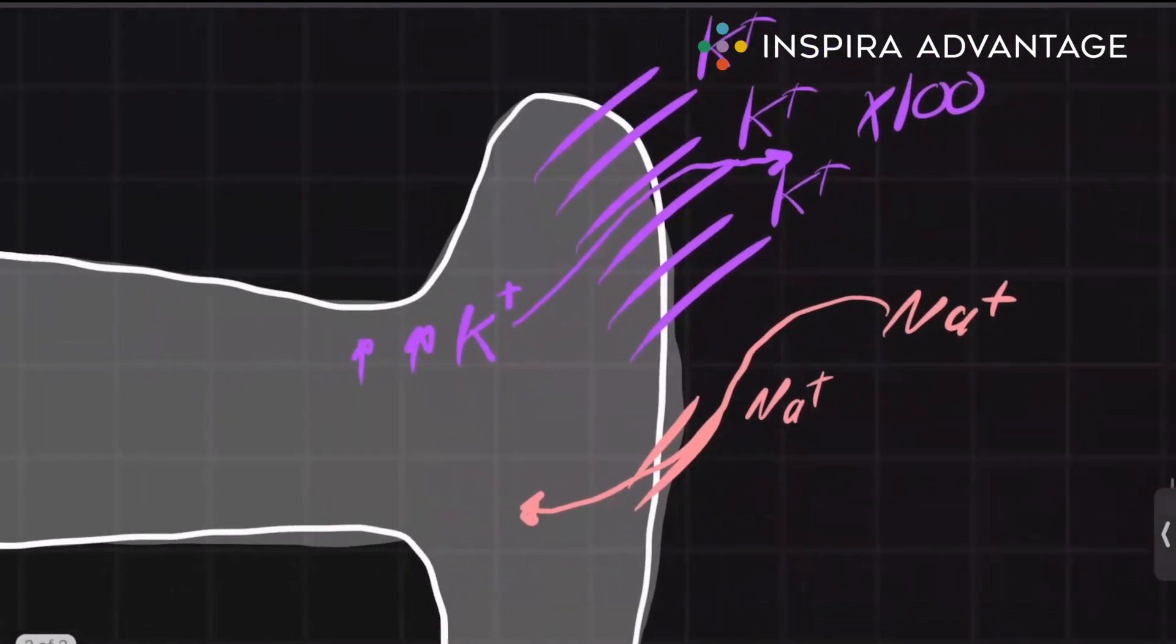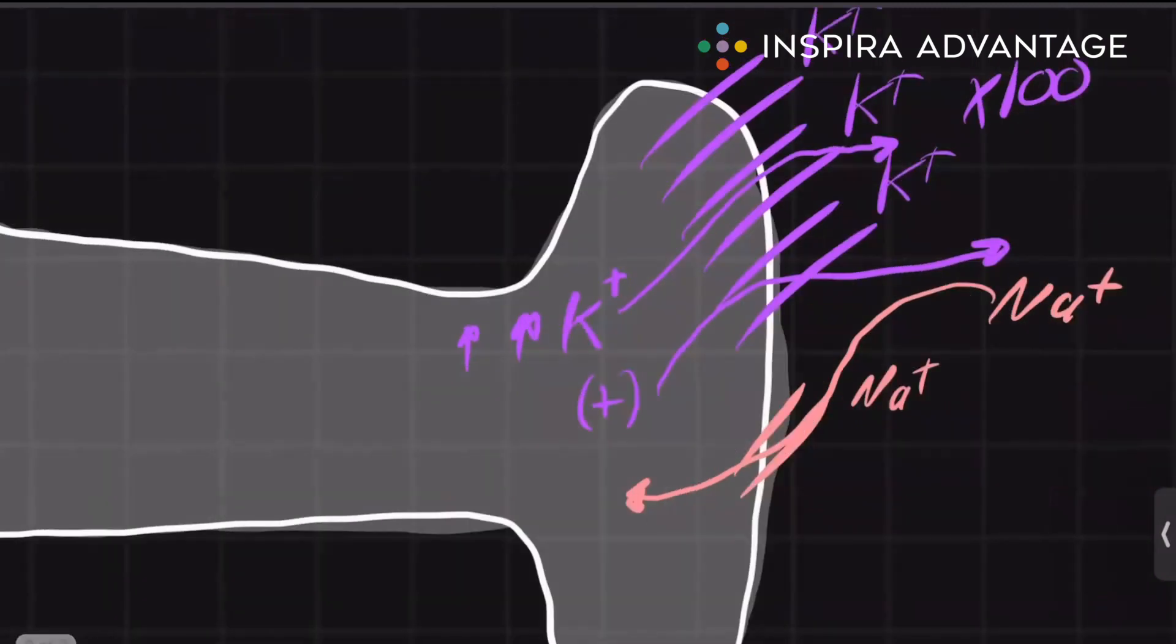So because we have a positive charge leaving the cell, inside the cell we are going to have a relatively negative charge. This negative charge happens to be negative 70 millivolts compared to the outside.